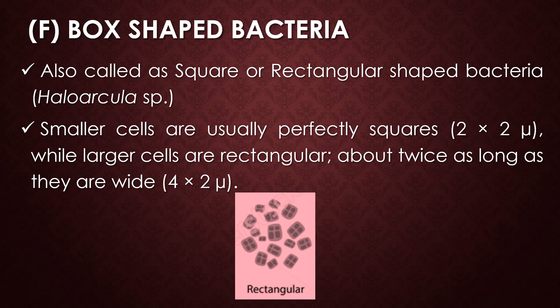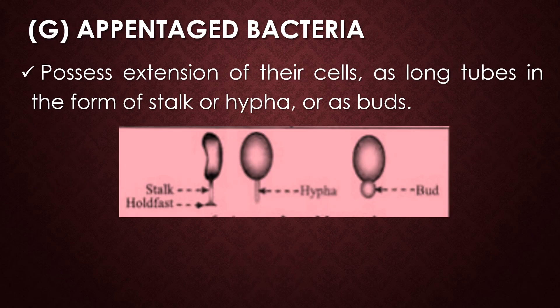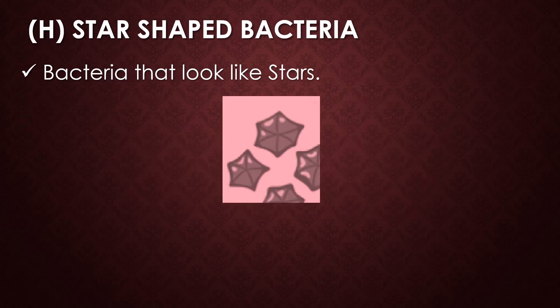Next is the box shaped bacteria. This type of bacteria looks like a box or rectangular shape. Smaller cells are usually square in shape, about 2×2 microns in size, and larger cells are rectangular, about 4×2 microns in size. The appendaged bacteria represent extensions of their cells as long tubes in the form of a stalk, hyphae, or buds. And the star shaped bacteria look like stars.